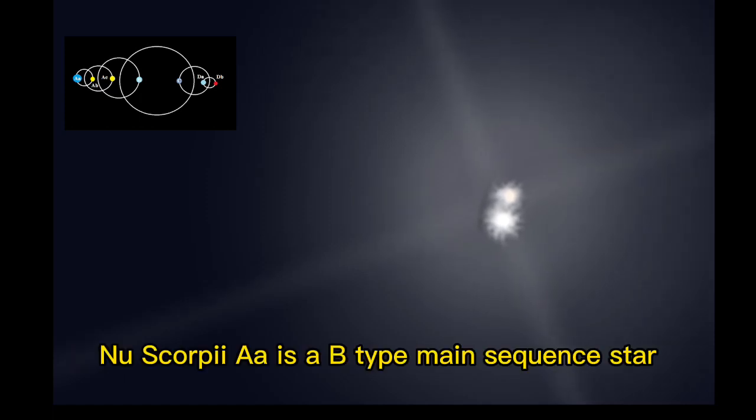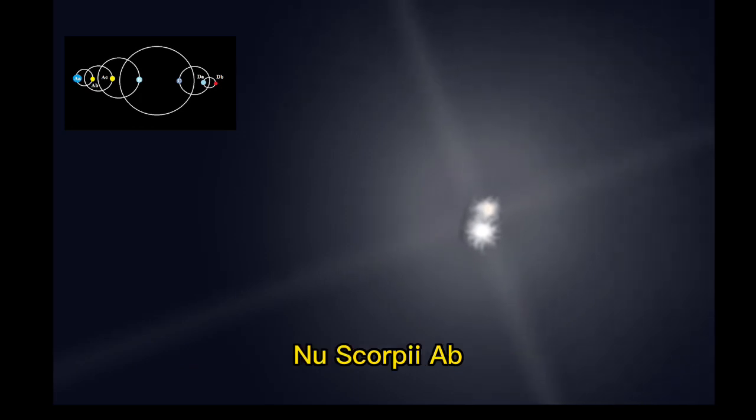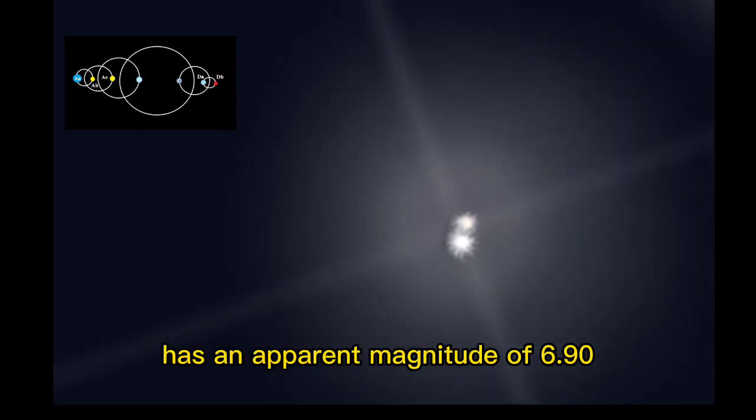Nu Scorpii Ab is a B-type main sequence star and the fainter component, with an apparent magnitude of 6.90.